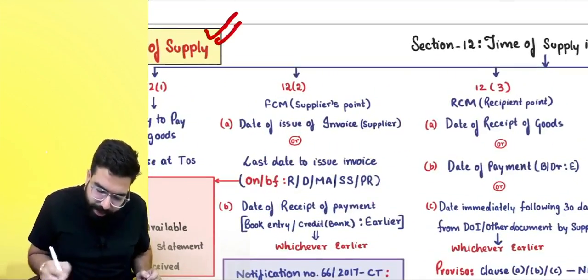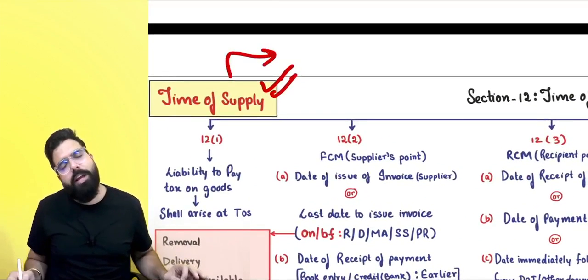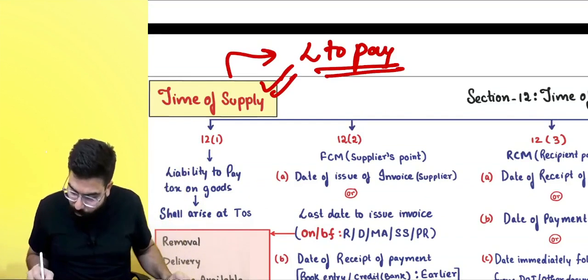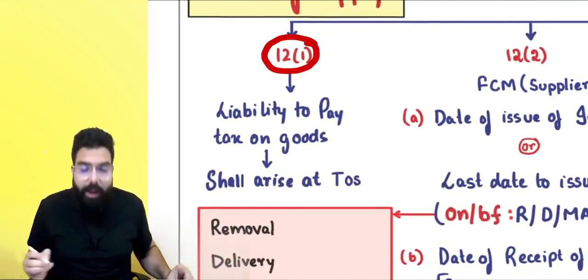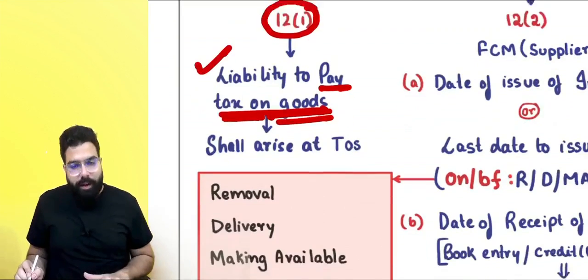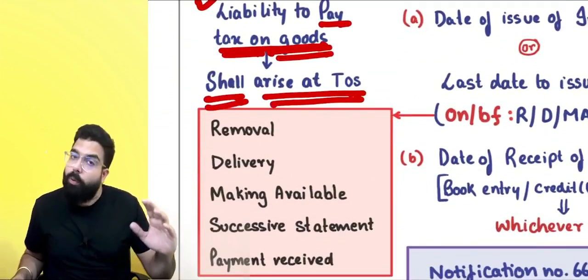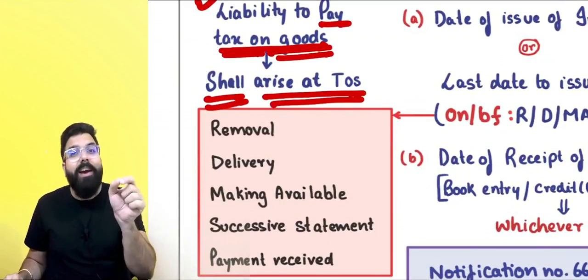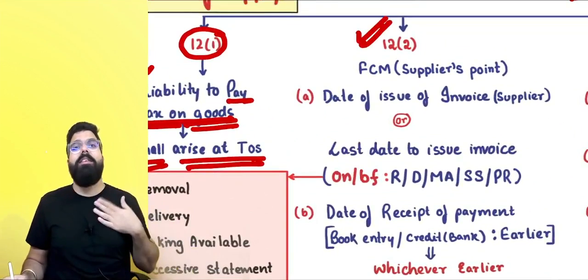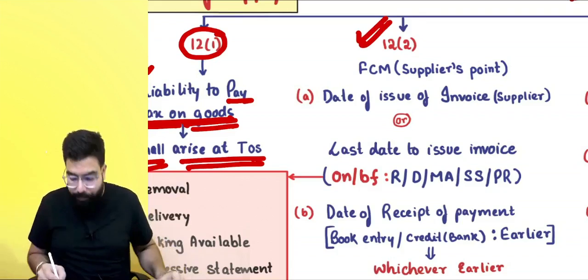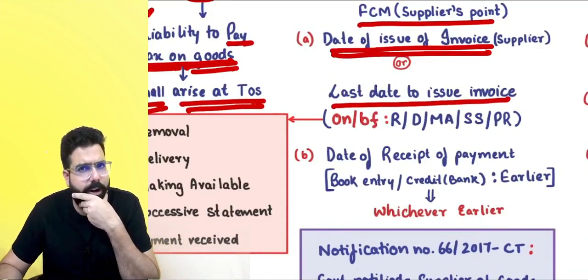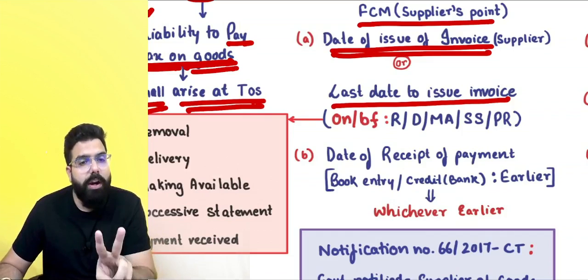Time of supply is that time when you become liable to pay. Section 12 sub-section 1 tells you: your liability to pay tax on supply of goods shall arise at the time of supply. Section 12 talks about when you become liable as a supplier. Under forward charge mechanism, the time of supply is the date of issue of invoice or the last date to issue invoice — which is on or before removal, delivery, or making it available.